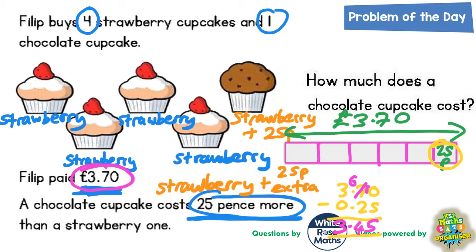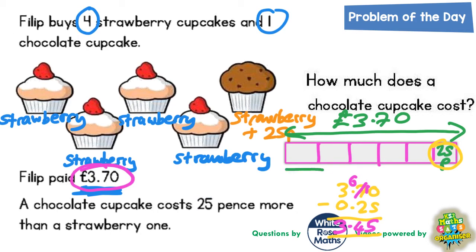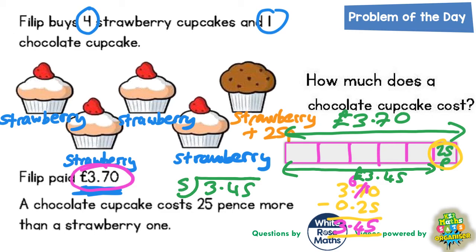If you knock the 25 pence off the £3.70, we've got £3.45 left, and this £3.45 spans across the five strawberry cakes. So if we share £3.45 by five, we will get the cost of one strawberry cake. Using the bus shelter method: fives into three won't go, so carry the three across to make 34. Fives into 34 goes six times — that's 30 with four left over. Carry the four to make 45. Fives into 45 goes nine times. So a strawberry cake must be 69p.